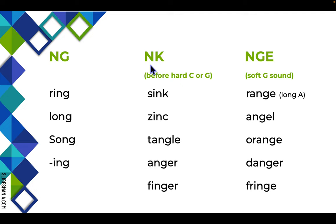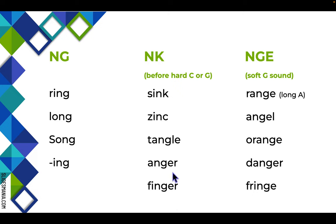If you have an N before a hard C sound or K — usually spelled with a K — or a hard G sound, because the N is hard to say before that, it typically sounds more like /ng/, like in 'sink,' 'zinc,' 'tangle,' 'anger,' or 'finger.'